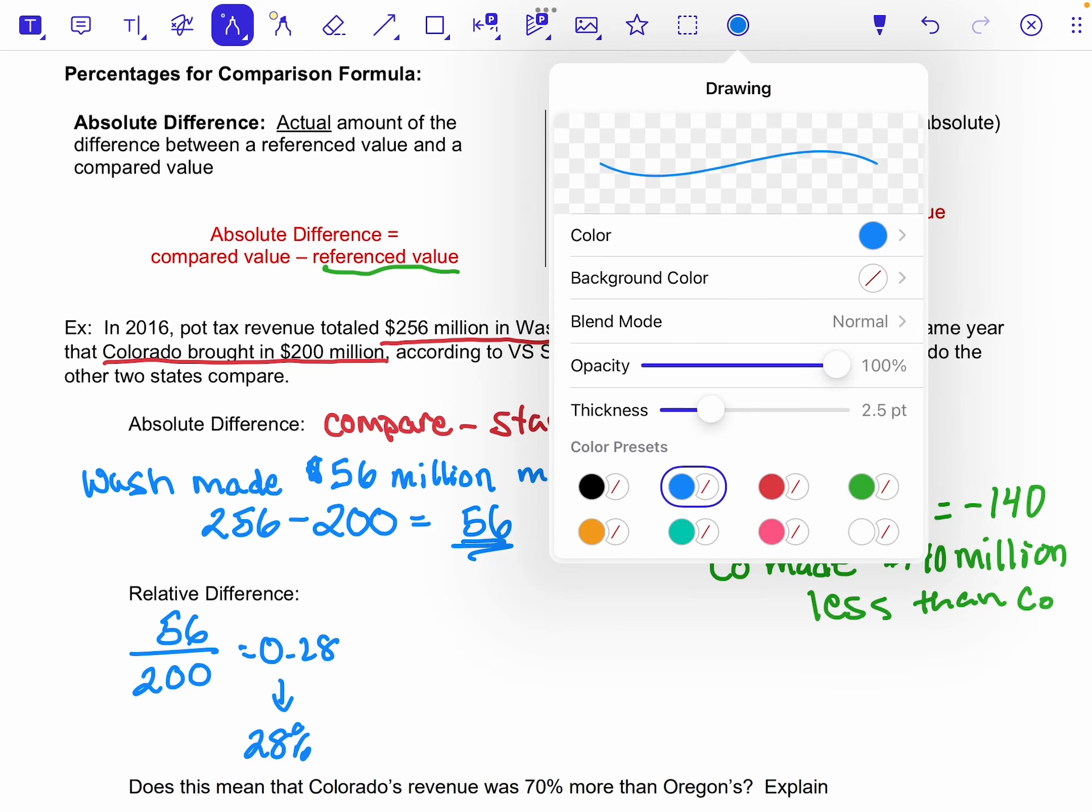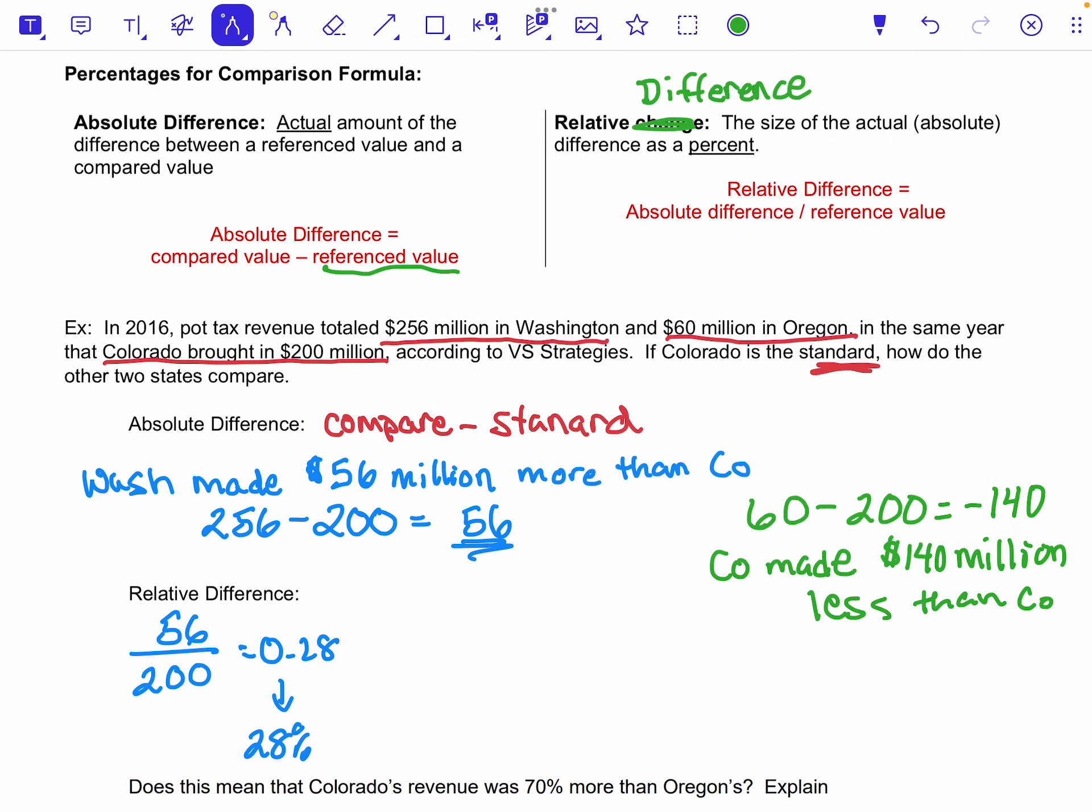Now if I do the same thing with Colorado, I would take that negative 140 - notice I pulled the sign again - over 200, and that when divided out would get me negative 0.7.